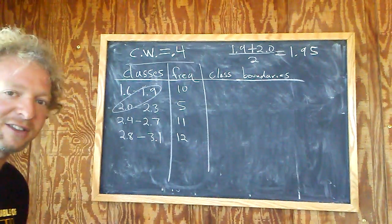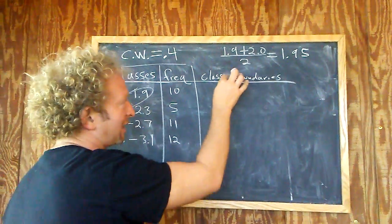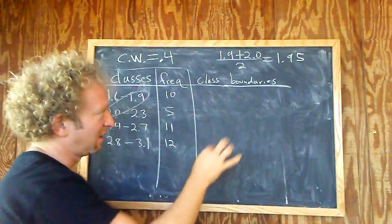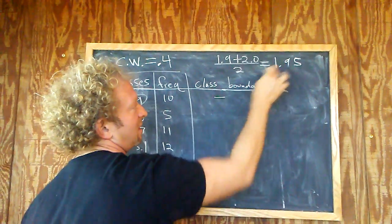So step one when you're finding the class boundaries, no matter what, just take these guys, add them up, divide by 2. So the class boundaries, when you write them on paper, they look like this. They have dashes. So I'm going to put a dash here, and this number goes here.